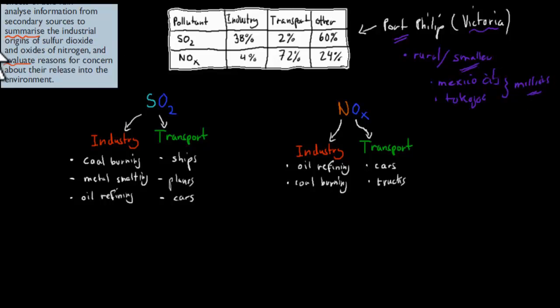And this is the actual origins of their pollutants. So, for example, sulfur dioxide and the oxides of nitrogen. For sulfur dioxide, 38% come from industry in terms of the sources, 2% comes from transport and 60% from other. So, for example, things like bacterial decomposition and the like also contribute to sulfur dioxide.